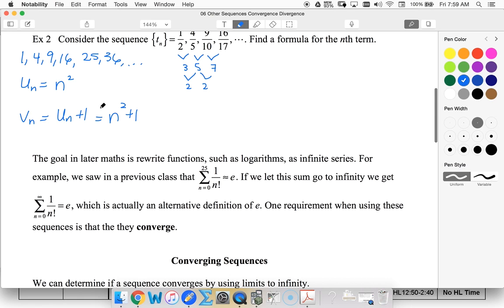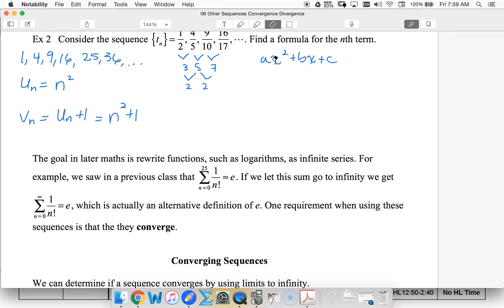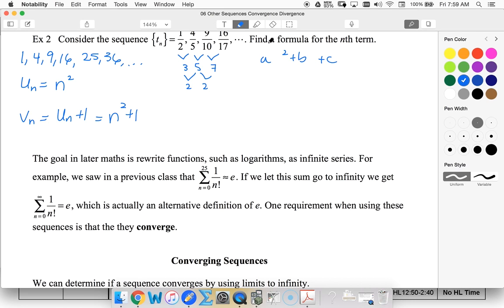So if you couldn't see that this was n squared plus 1, the other thing we could do is say, okay, we know it's quadratic, so we know it has this form, and really we should use n's here, and that would be our vn, and then we could plug in what we know.